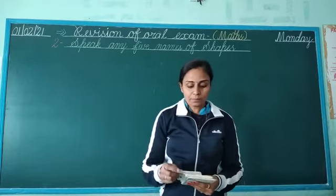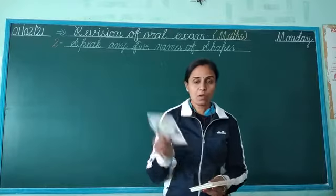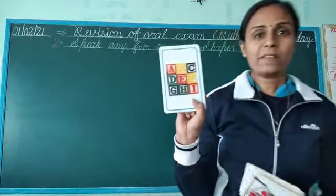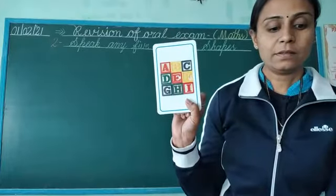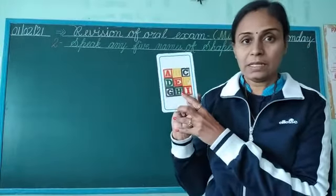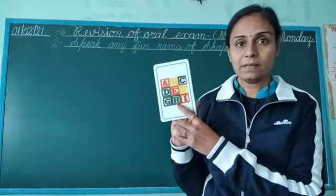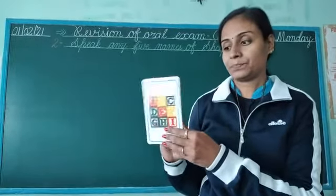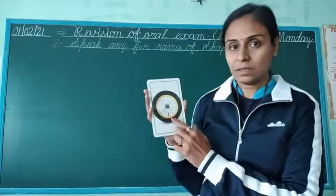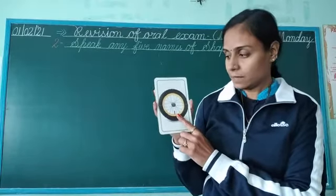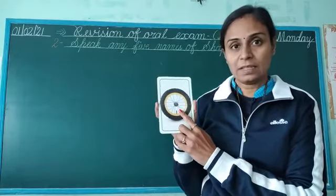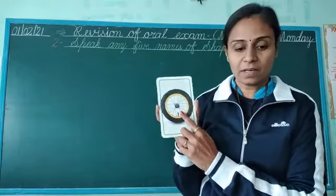Which shape is this? This is square. Which shape is this? This is circle.